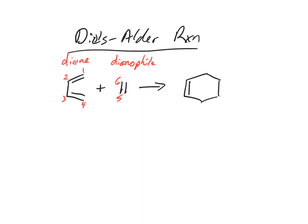We call this a cycloaddition reaction, cycloaddition, because in this reaction we form one new pi bond and two sigma bonds.